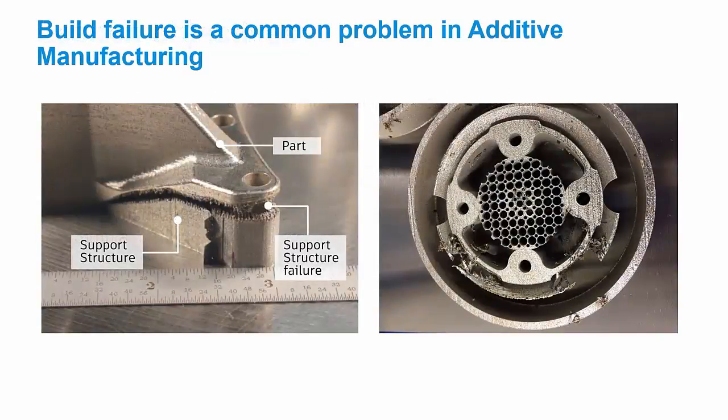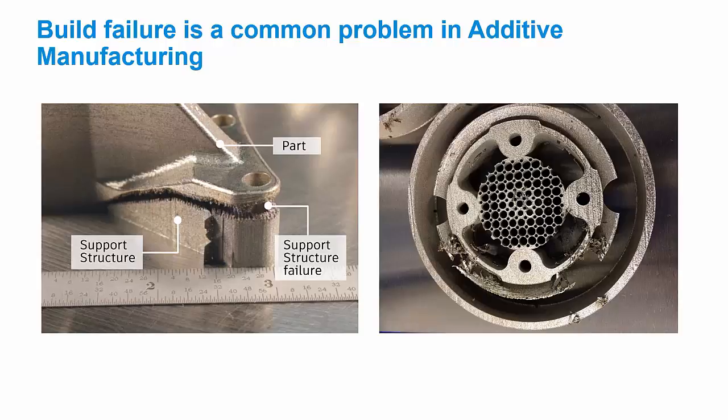When we started developing NetFab Simulation, the goal was to be able to predict any common failure mode brought upon by excessive distortion or residual stress. A couple examples are right here. This is an example where a part actually distorted to the point that it delaminated from its support structure and the build failed, and here's another part that actually distorts upward in the build direction through the top of the powder bed and gets hit by the recoater blade when it goes to rake a new layer of powder. That part got ruined as well.